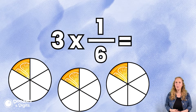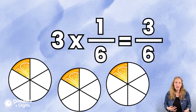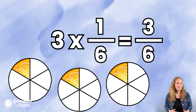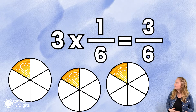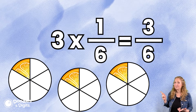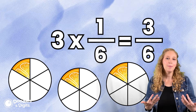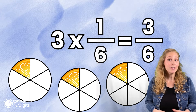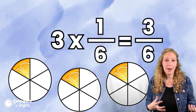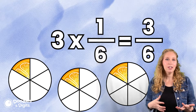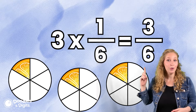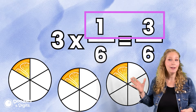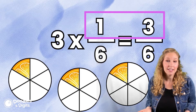All right. What do you notice? What am I multiplying? And what's staying the same? What's going on with the models? You might have noticed when we multiply a fraction by a whole number, we're going to actually multiply the numerator and keep the denominator the same.